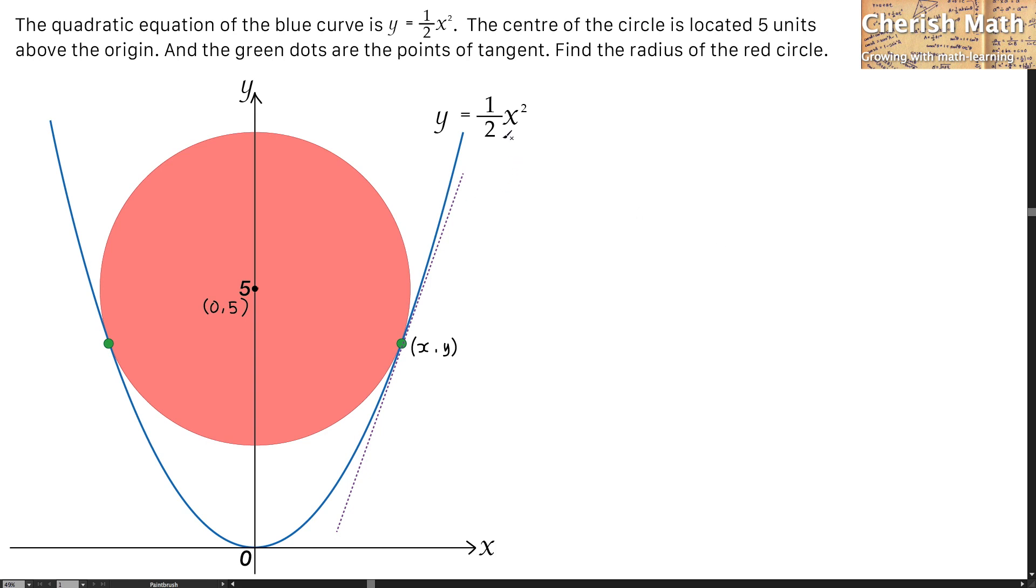I'm going to use differentiation on this equation in order to work out the gradient of this dotted line. And that is dy over dx equals one-half multiplied by 2x to the power of 2 minus 1.